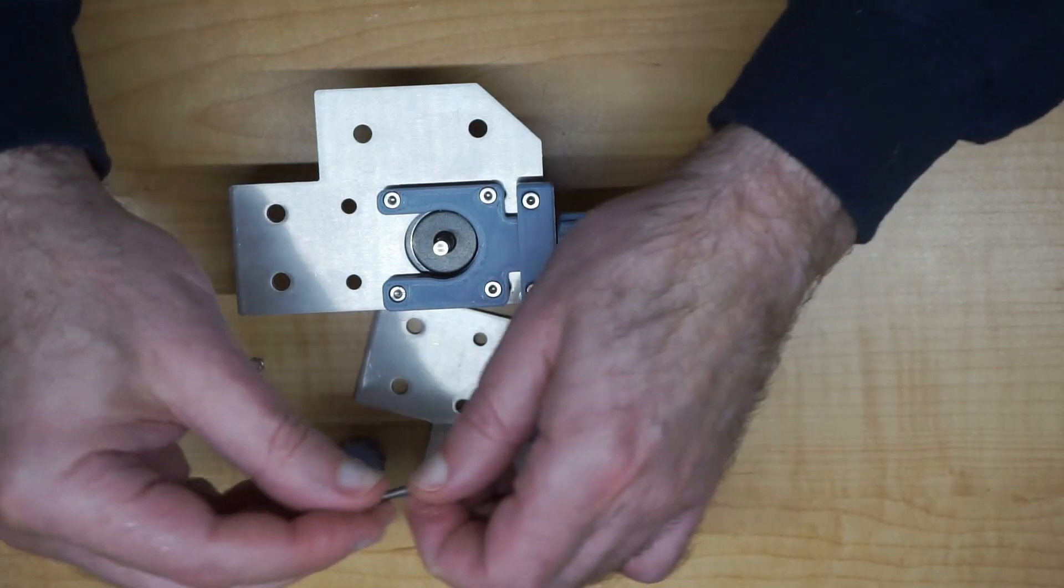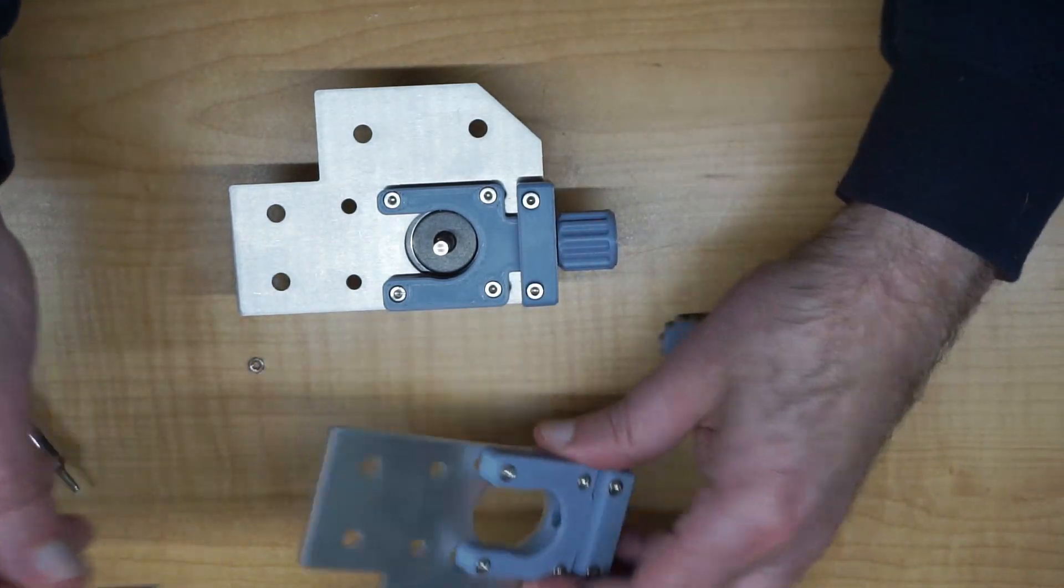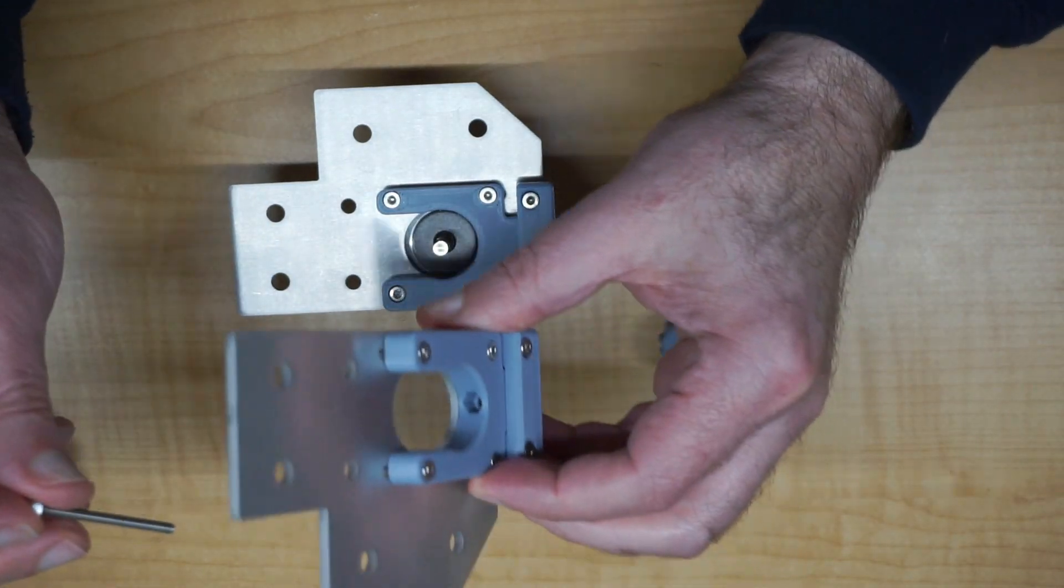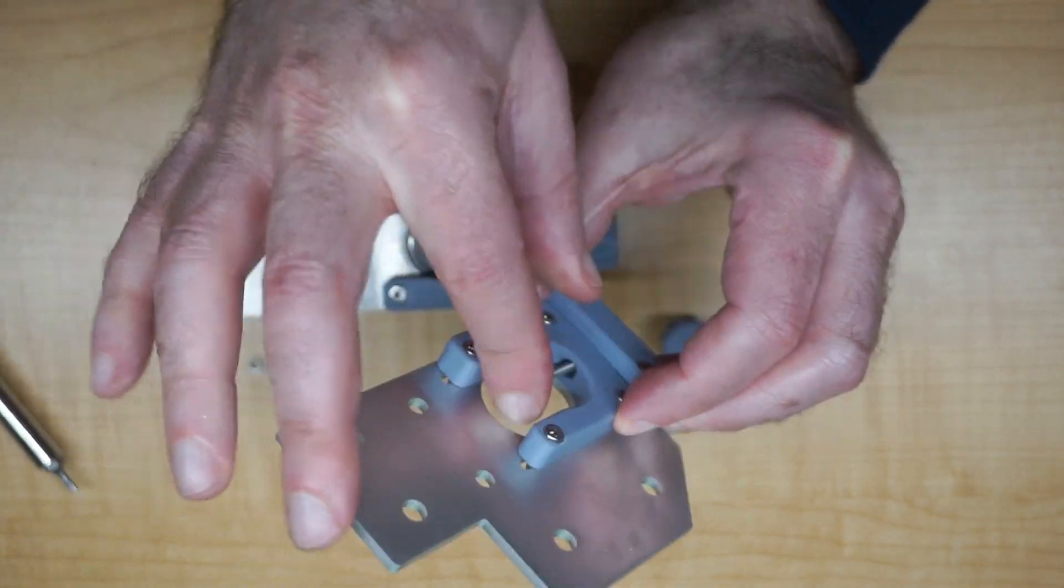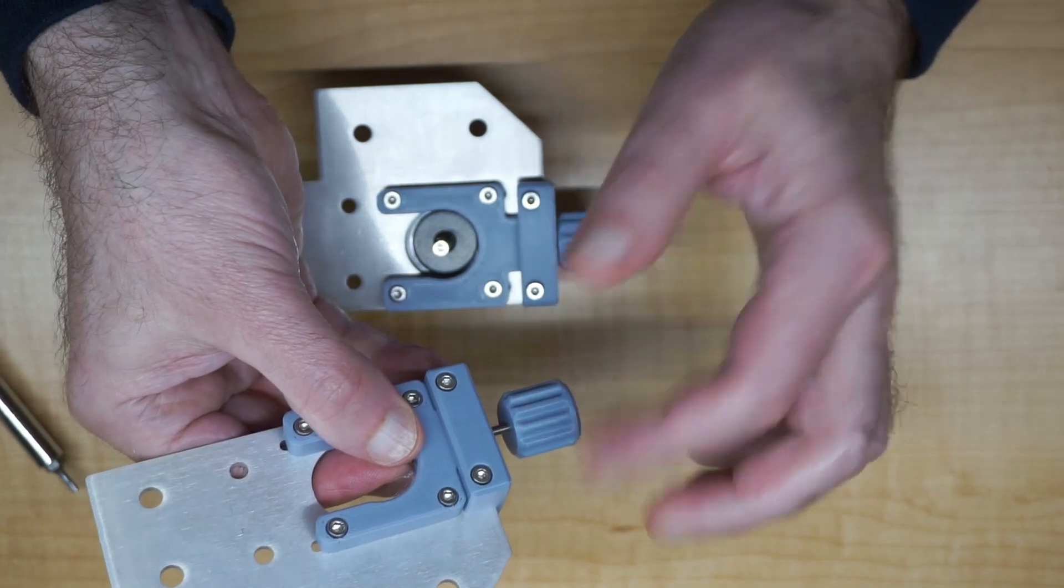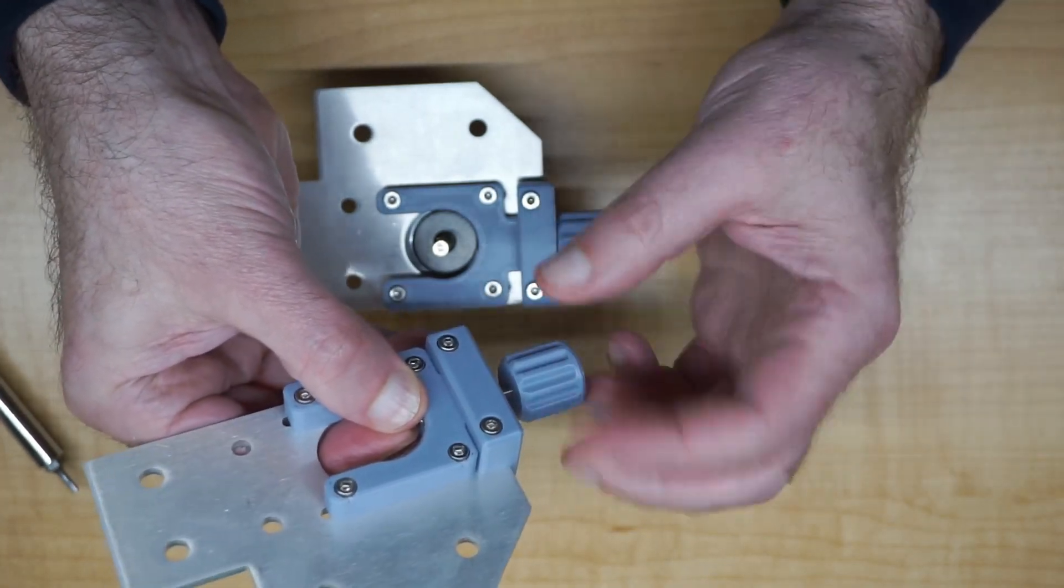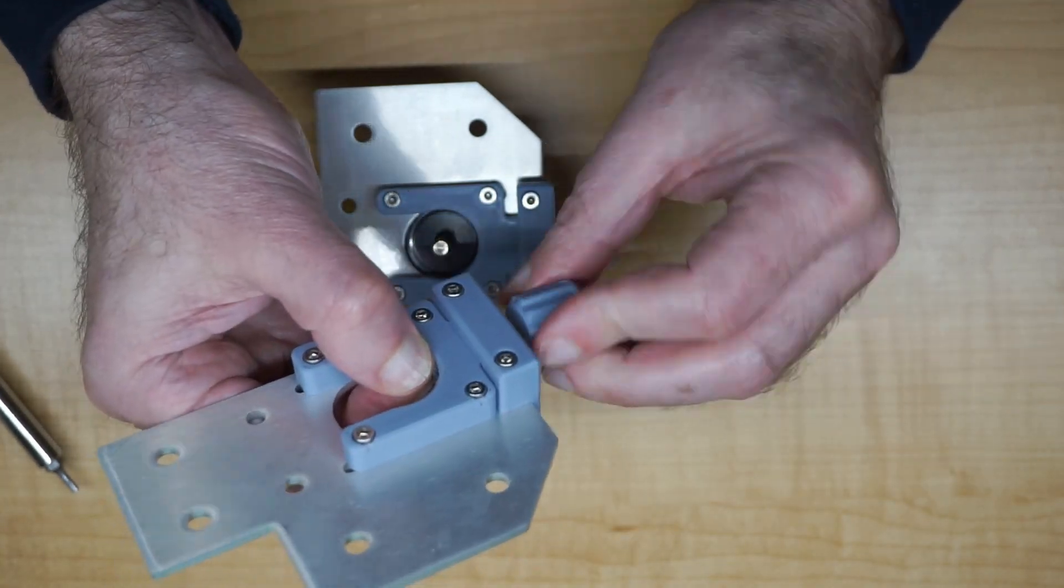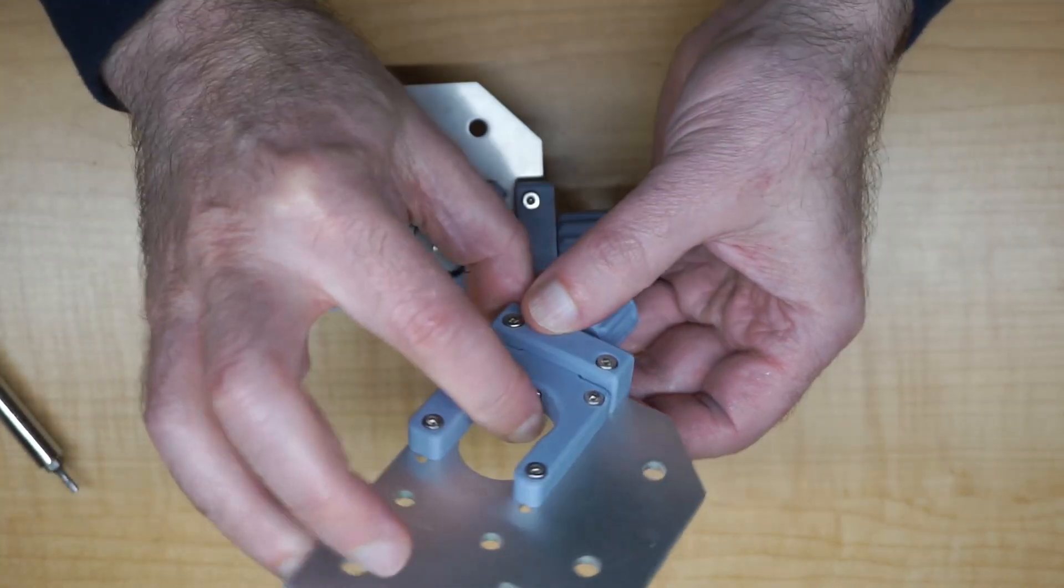After you got that done, it basically goes right in here. There's a spot for that to sit nicely and then once you got the nut on, it'll pull it through and seat it and hold it in place there.